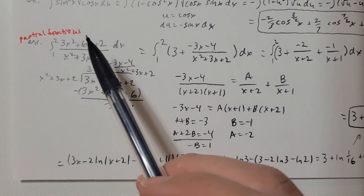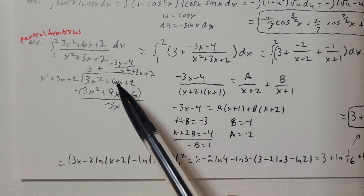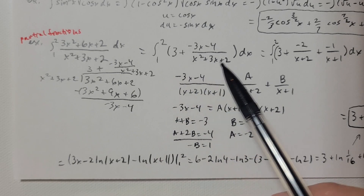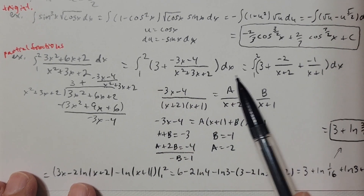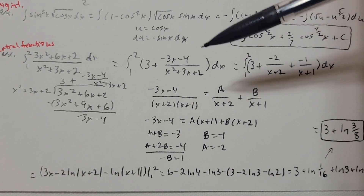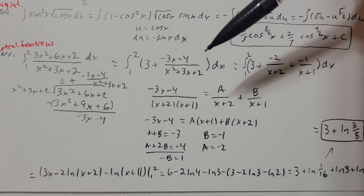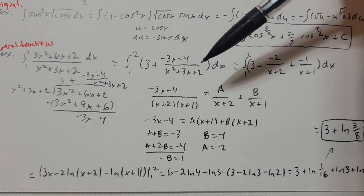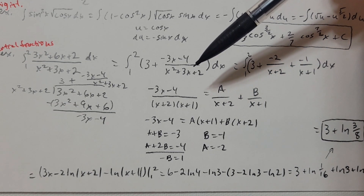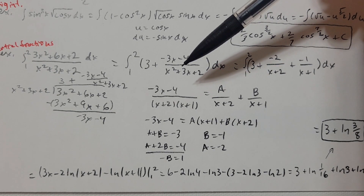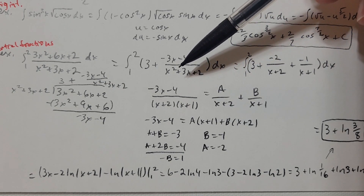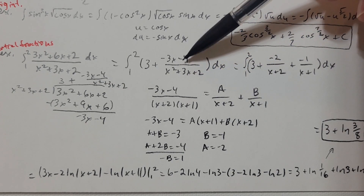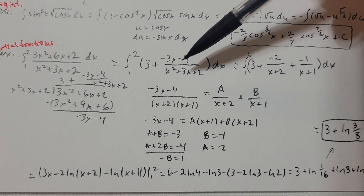When we simplify and divide that out, we get the simplified function. The antiderivative of 3 is 3x. Now for the antiderivative of (negative 3x minus 4) divided by (x squared plus 3x plus 2), a u-substitution won't work — if I let u be the denominator x squared plus 3x plus 2, then du is 2x plus 3, and I don't have that up top.